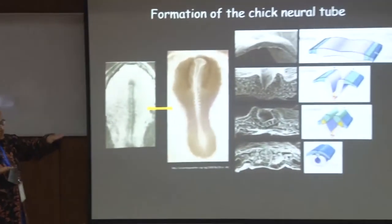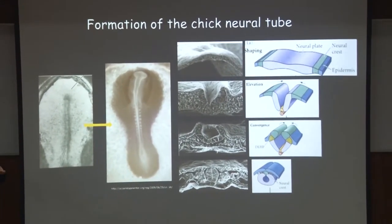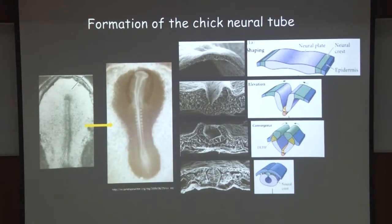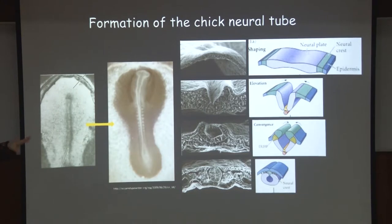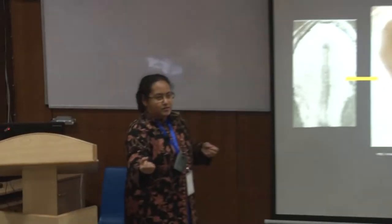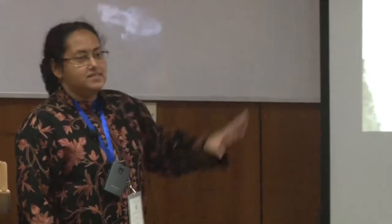Then the process called neurulation occurs. The topmost layer — the ectoderm — undergoes specification: the middle part is going to become the nervous system and the sides will become the skin. What happens to this middle? It folds. If you imagine a sheet of paper and push it from both sides, it dips down in the middle. The sheet of cells is pushed from two sides so that it dips down and the edges of the two folds come together and fuse. You get a top layer that is continuous and a hollow cylinder underneath — this hollow cylinder is the entire central nervous system.